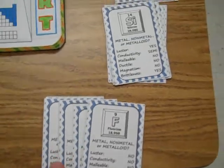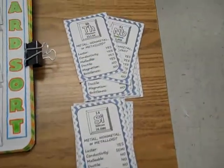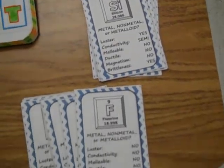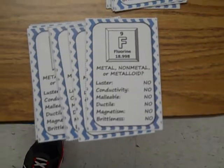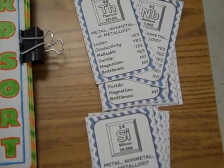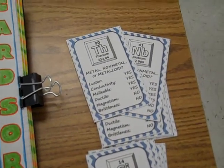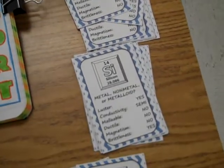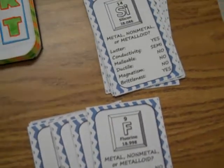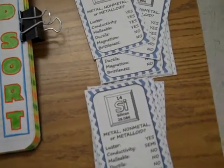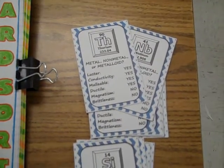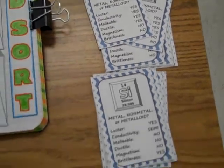As you can see, all three sets of cards are the same color and the same design. What students are supposed to do is take them all out, mix them all up, and then sort them into three stacks: metals, metalloids, or non-metals.